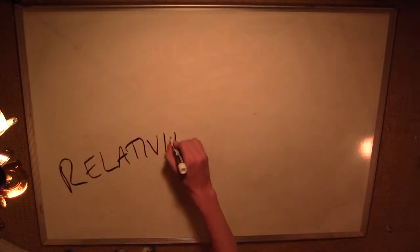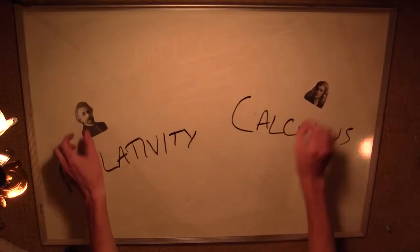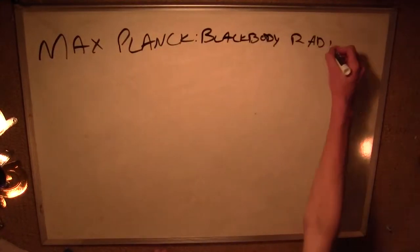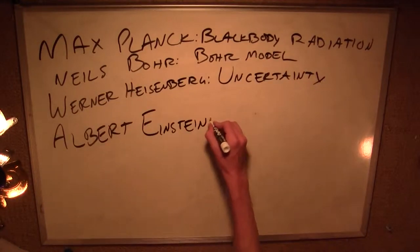It arose roughly around the beginning of the 20th century, and unlike relativity or calculus, which were largely pioneered by one person, it took lots of brilliant scientists with lots of weird names and weird ideas to get it off the ground.